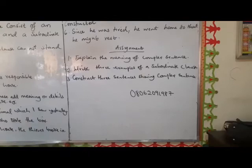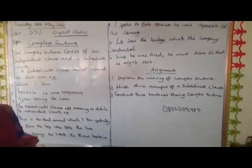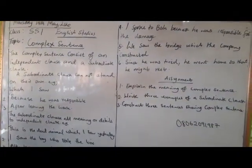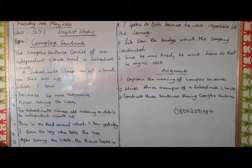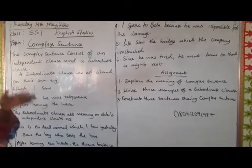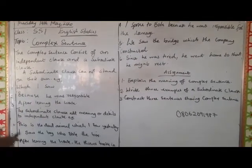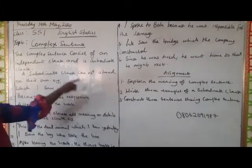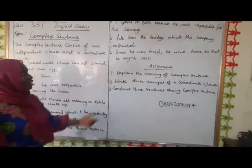In essence, a complex sentence has to do with independent and subordinate clauses coming together, making use of relative pronouns or connectives. You must also know that the subordinate clause cannot stand on its own — it is just like a backup. It gives additional information to what the main or independent clause is talking about. That is why it is called 'complex' — because it must have an independent clause and one or two subordinate clauses.